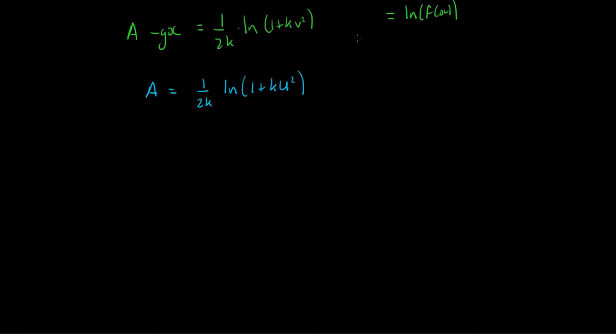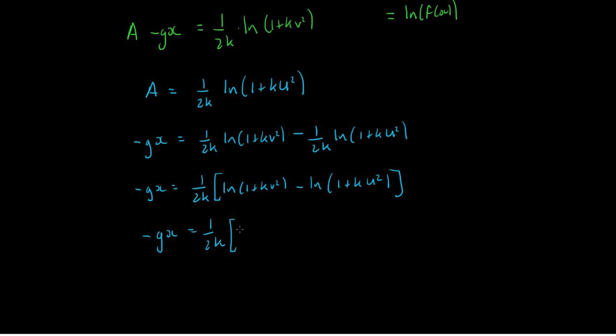So writing this out, I'm going to take this A immediately over to the left hand side. We get minus gx is equal to 1 over 2k and the natural logarithm of 1 plus kv squared, subtract 1 over 2k times the natural logarithm of 1 plus ku squared. Using the subtraction law for the law of logarithms, we can say that this is now equal to 1 over 2k times the natural logarithm of 1 plus kv squared divided by 1 plus ku squared.